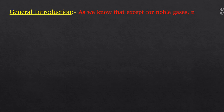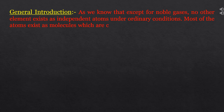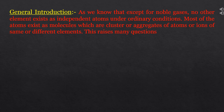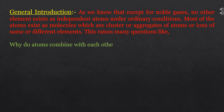As we know that except for noble gases, no other element exists as independent atoms under ordinary conditions. Most of the atoms exist as molecules, which are clusters or aggregates of atoms or ions of same or different elements. This raises many questions: first, why do atoms combine with each other? Second, why do certain atoms combine whereas others do not?